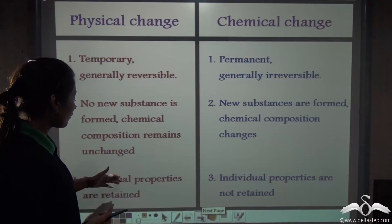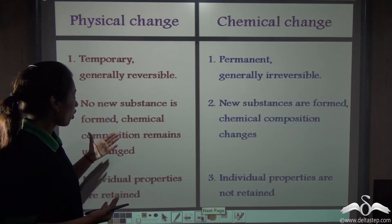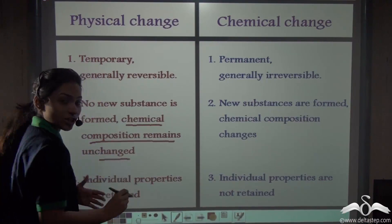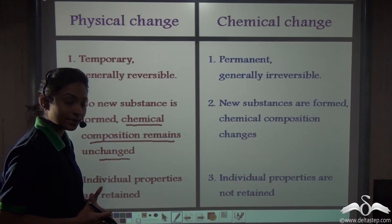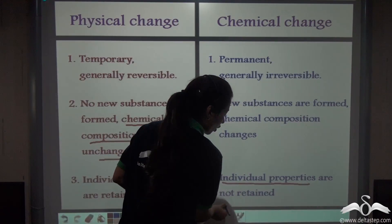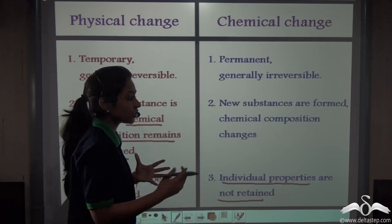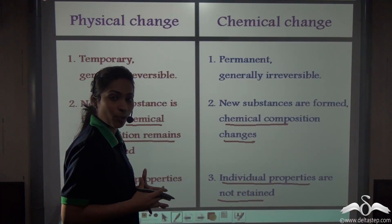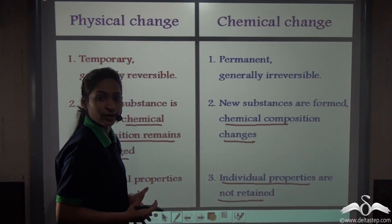Thirdly, the individual properties are retained whenever there is a physical change. When there is a physical change, the chemical composition of the original substance remains unchanged, and that automatically implies that the individual properties are retained. In the case of a chemical change, individual properties are not retained because the original substance undergoes a change in its chemical composition. That means it will turn into another new substance, so its individual properties are not retained.